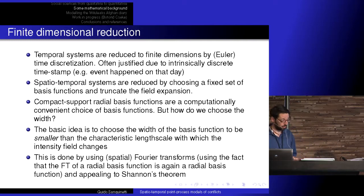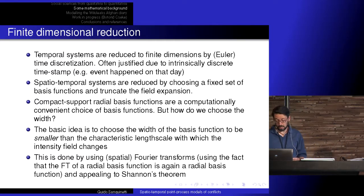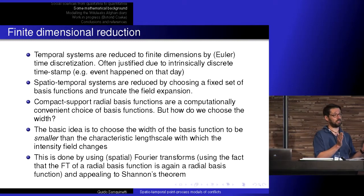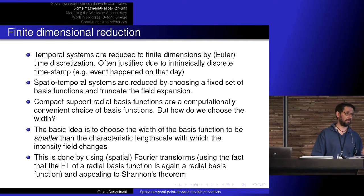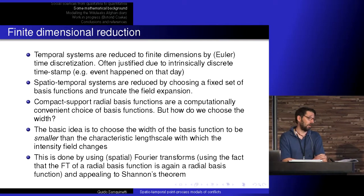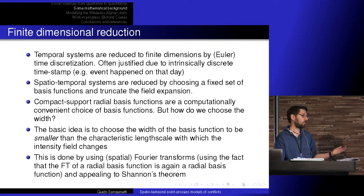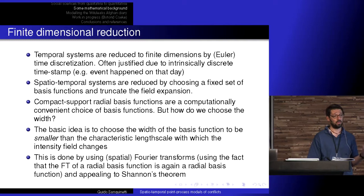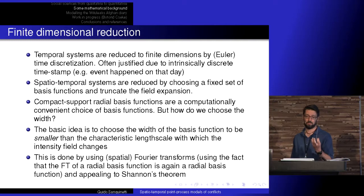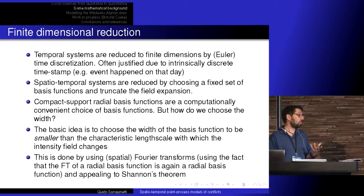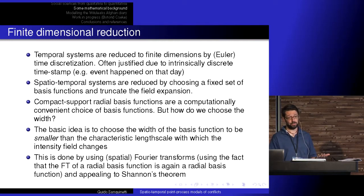Taking continuous-time systems and reducing them to finite-dimensional objects is simple: we discretize time, partly because timestamps for our events are often already discretized. In space, instead, we want to maintain a semblance of continuous space — we don't want discontinuous functions. So we project the spatial aspect onto a finite-dimensional subspace but retain continuity of sample trajectories, using basis functions. The most famous are the Fourier transform, but that's not appropriate here — we wanted compact-support things that give a sense of localization. The question is how to choose the basis functions.